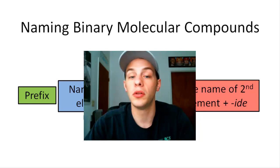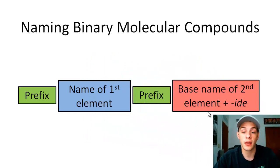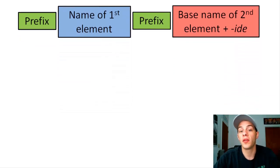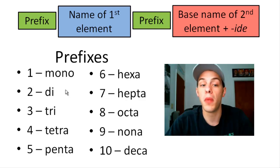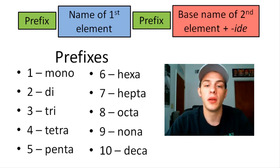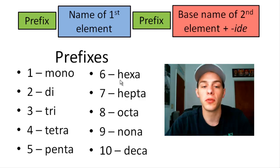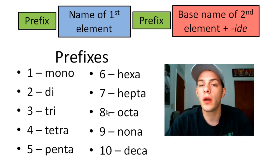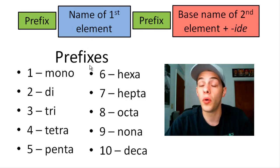You include the name of your first element, followed by the base name of your second element plus the suffix -ide, and then prefixes that tell you how many atoms of each element there are. The prefixes are: mono (1), di (2), tri (3), tetra (4), penta (5), hexa (6), hepta (7), octa (8), nona (9), and deca (10). The only exception is if your first element has only one atom — you don't use the prefix mono. So instead of monocarbon monoxide, it's just carbon monoxide.